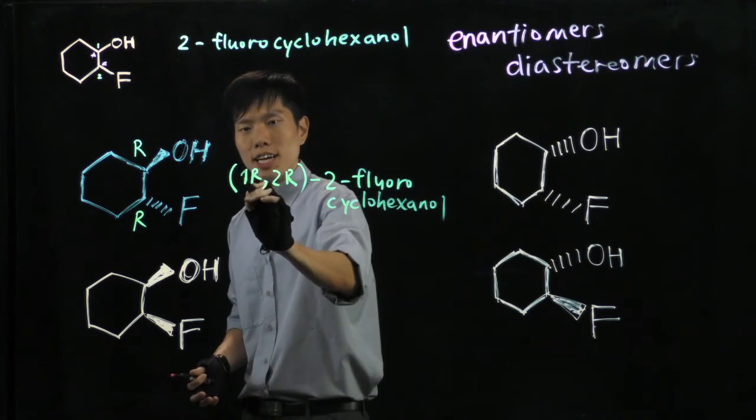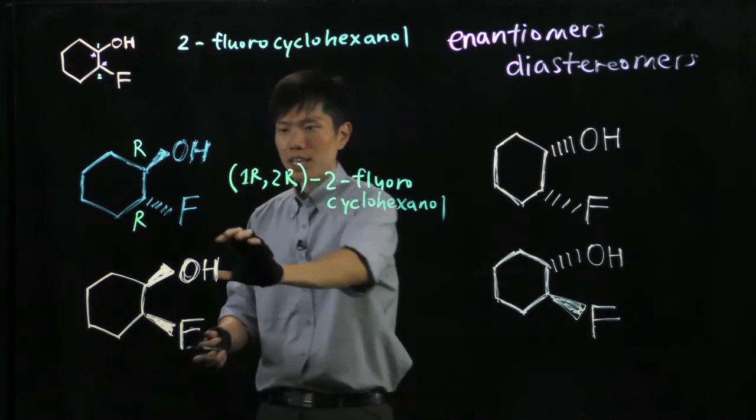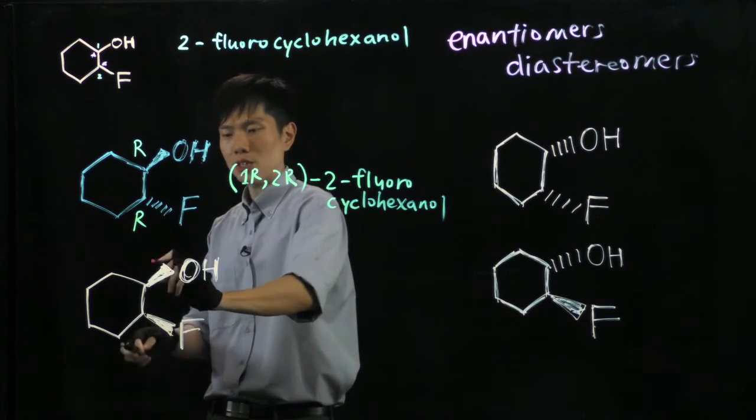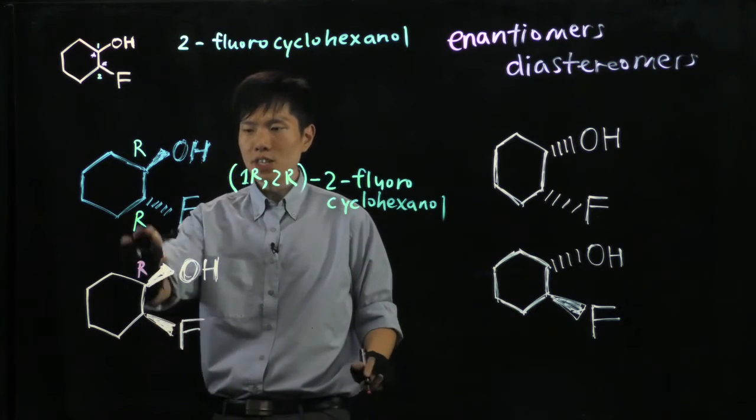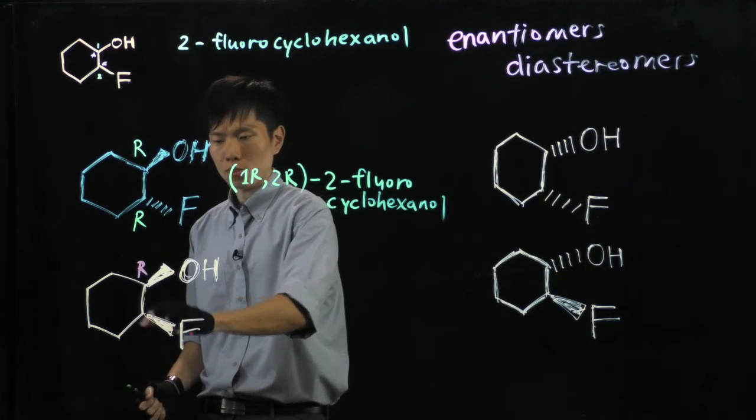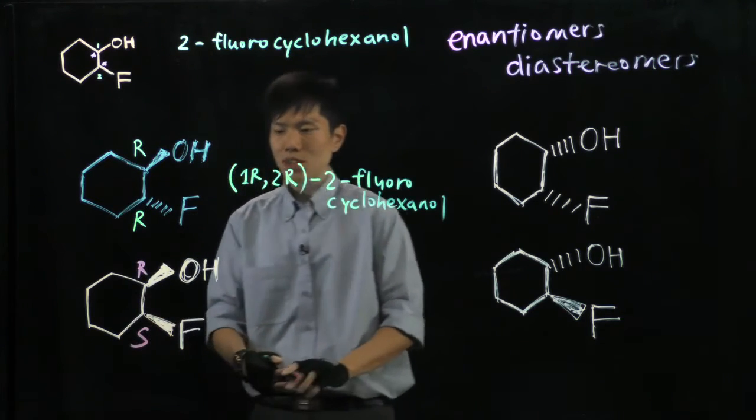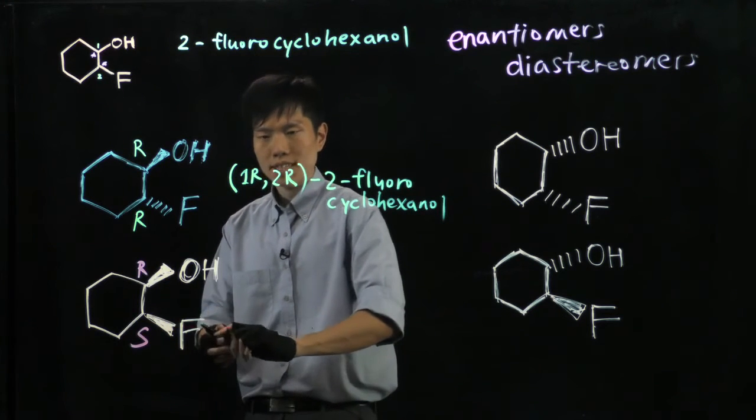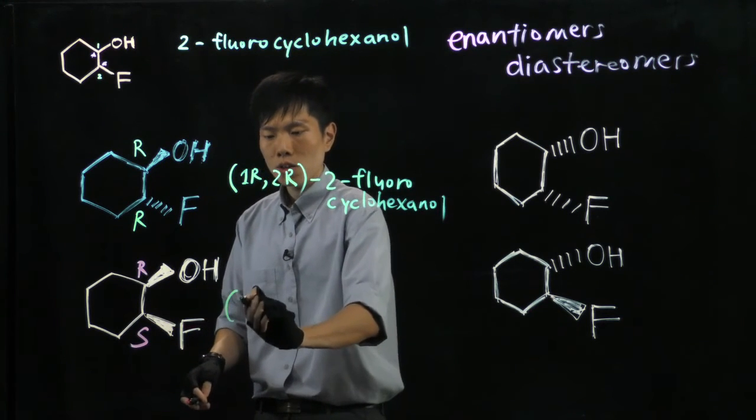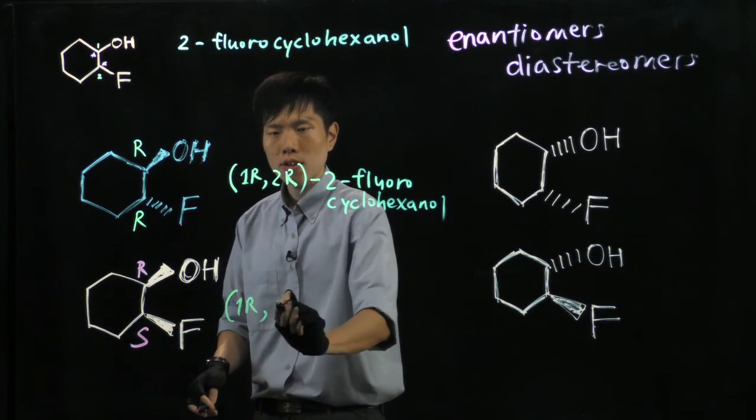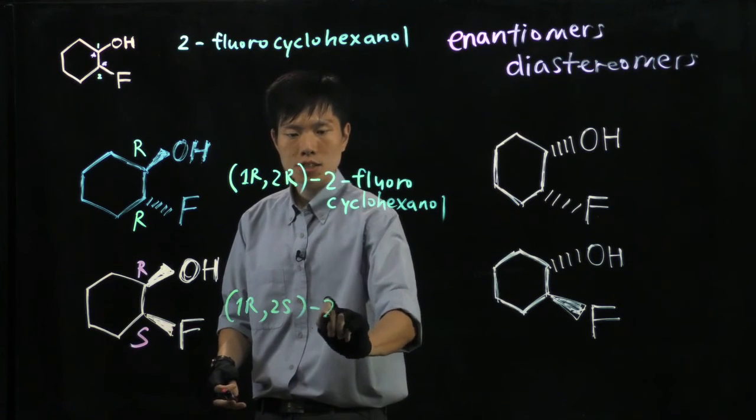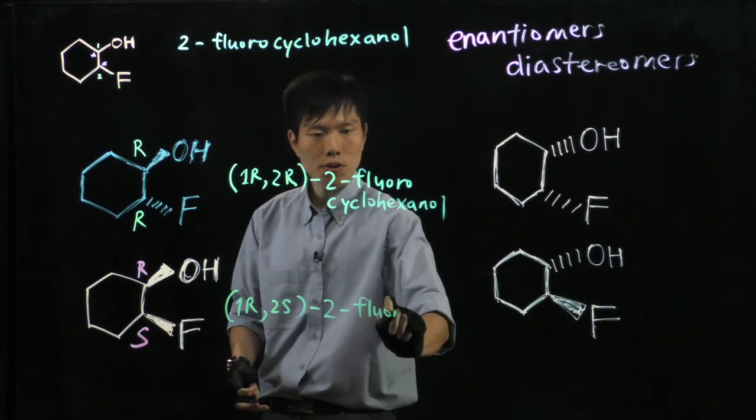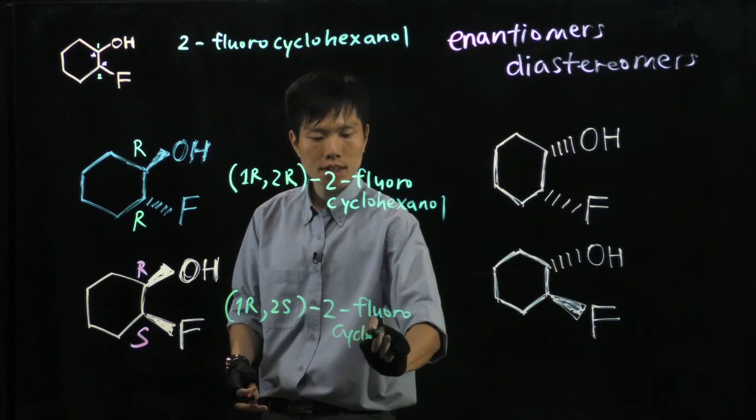Now, the next molecule at the bottom, since the OH is the same, so it is still an R, but the F is being reversed. So, 1, 2, 3, this is S. So for this case, because we know that fluorine connects to carbon number 2, that will be called 1R, 2S, 2-fluorocyclohexanol.